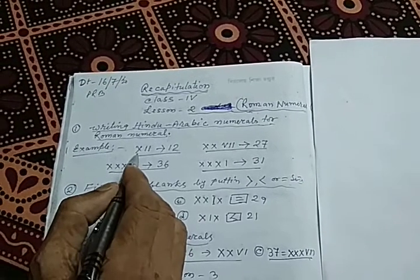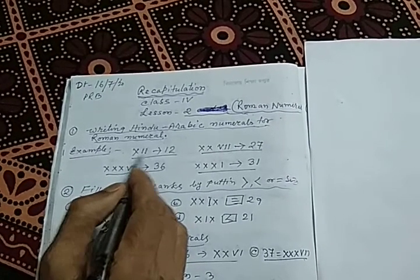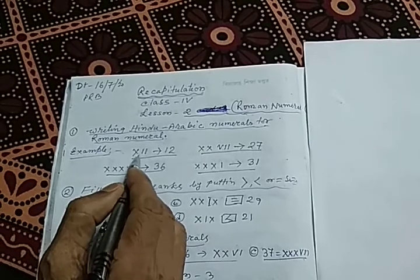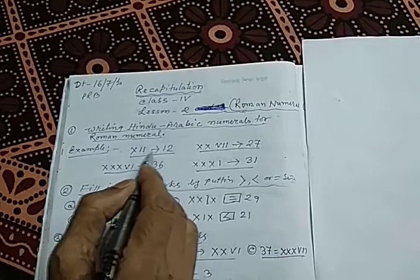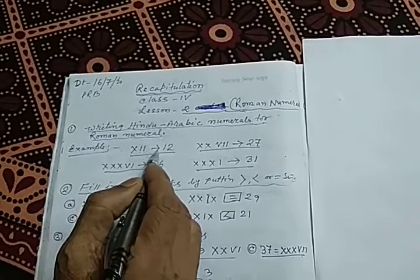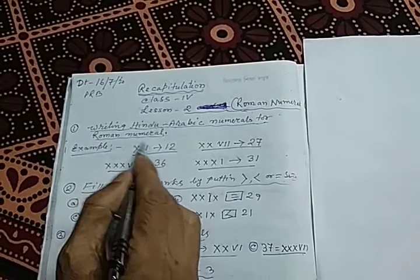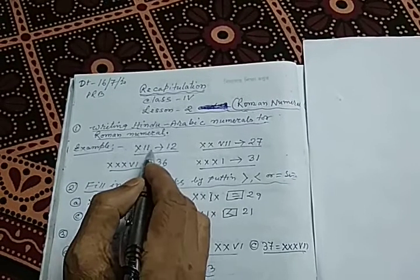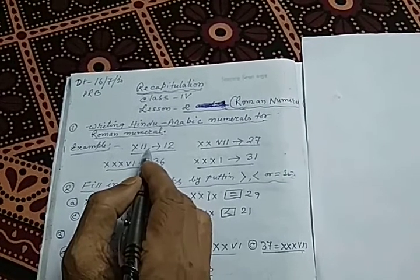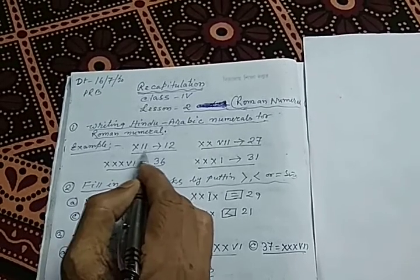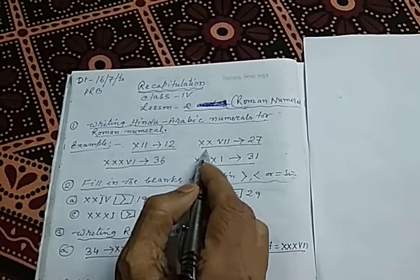Example 1: 10 plus 1 plus 1, that is 10 plus 1 equals 11, and 11 plus 1 equals 12. This is the Roman numeral given, and the Hindu-Arabic number against this Roman numeral is 12.